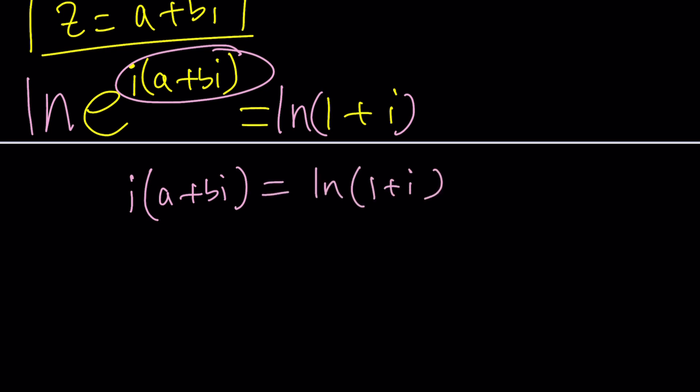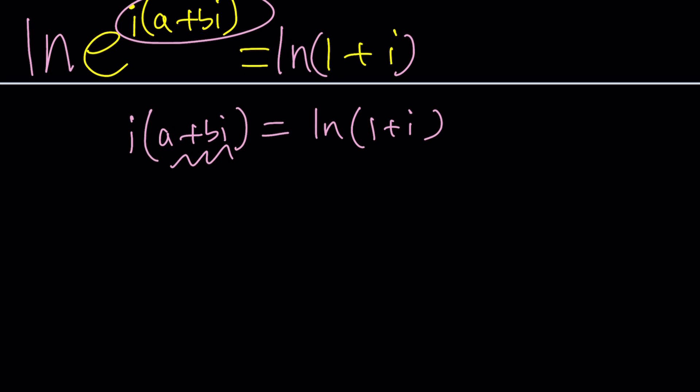And this should be fairly easy to solve even if you didn't call this a plus bi because our goal is to solve for a plus bi, right? And then from here I could probably just do a plus bi equals ln 1 plus i divided by i. But what is ln 1 plus i? That's another question we need to answer, right?